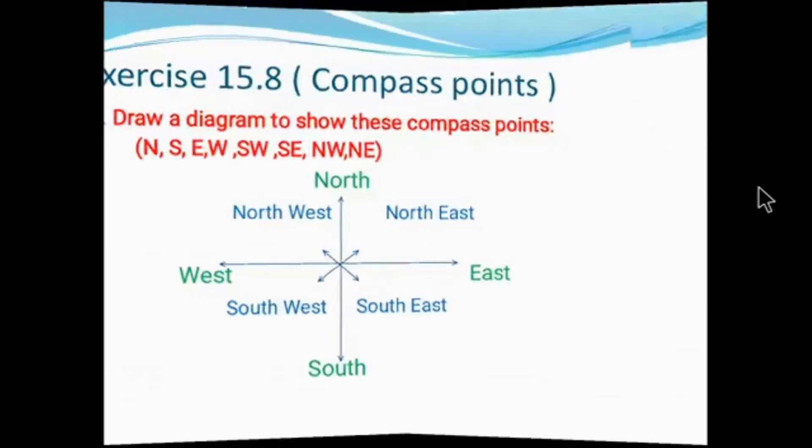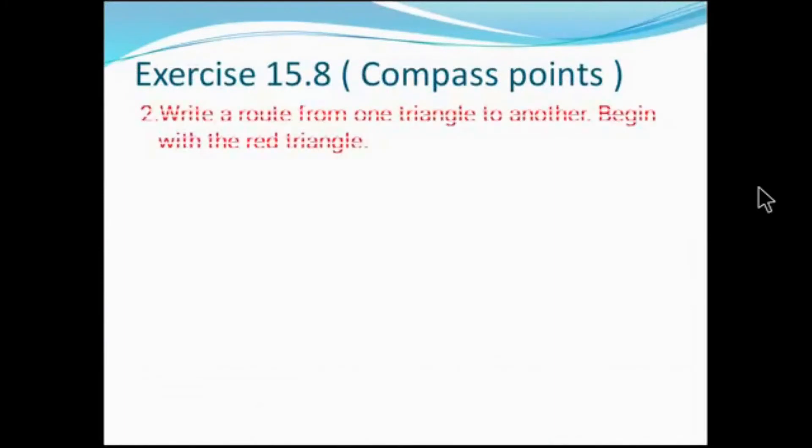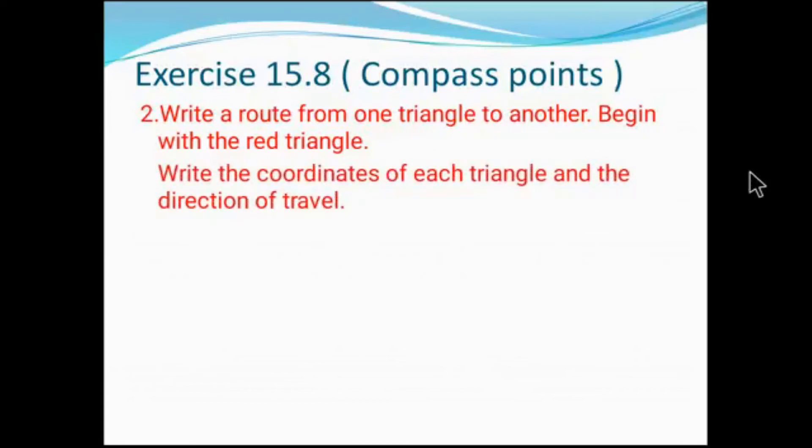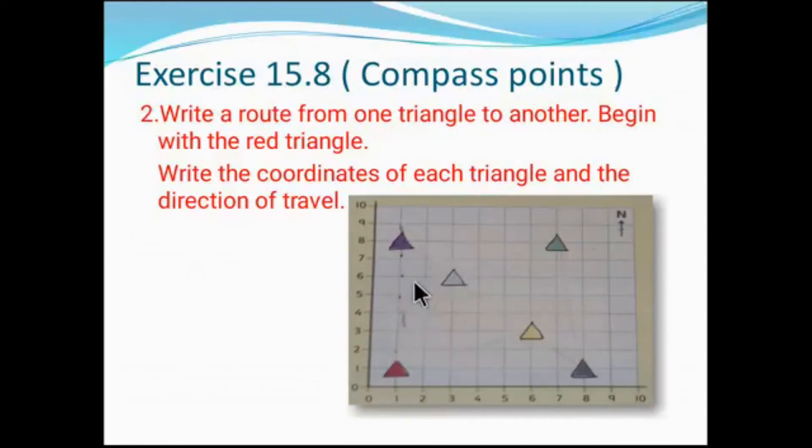Let's enter our next question. Question number 2: Write a route from one triangle to another. Begin with the red triangle. Write the coordinates of each triangle and the directions of travel. Look at this - they have given a graph paper. They have drawn six triangles in different colors. We have to start the journey from this red triangle.